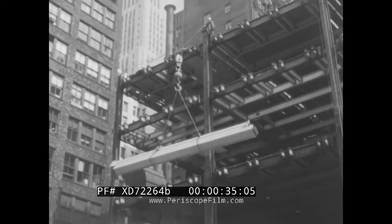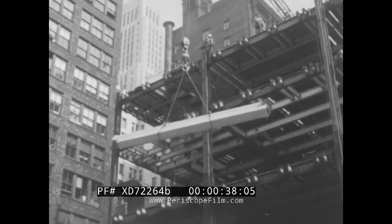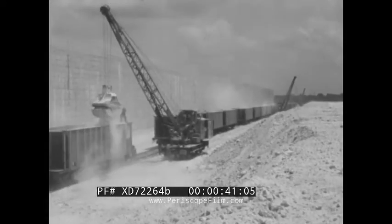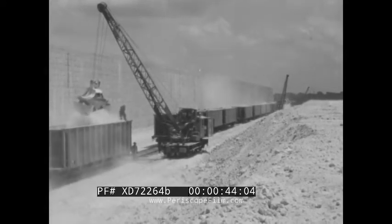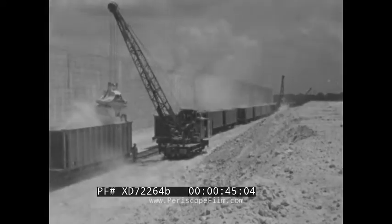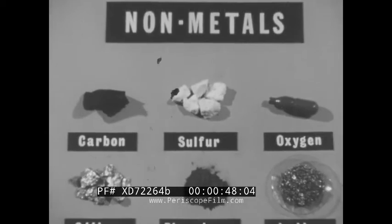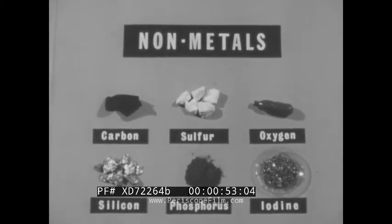In our physical world, there are metals, such as those in steel, and non-metals, such as sulfur. Sulfur, carbon, oxygen, silicon, phosphorus, and iodine are among the 22 elements usually classed as non-metals.